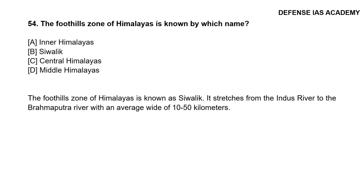Question 54: The foothill zone of the Himalayas is known by which name? The correct answer is Shivalik. The foothill zone of the Himalayas is known as Shivalik and it stretches from the Indus River to the Brahmaputra River with an average width of 10 to 50 kilometers.